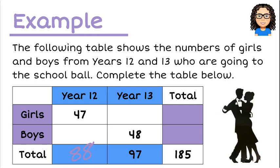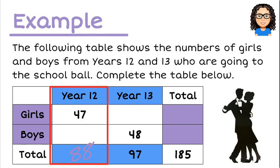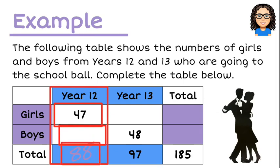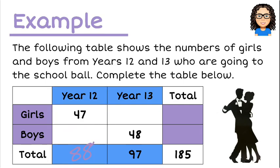From the 88 Year 12 students that went to the ball, there are 47 of them that were girls. Some other number were boys, and that has to add up to the total of 88. So if I do 88 minus 47, that tells me there were 41 boys that were in Year 12 that went to the ball.